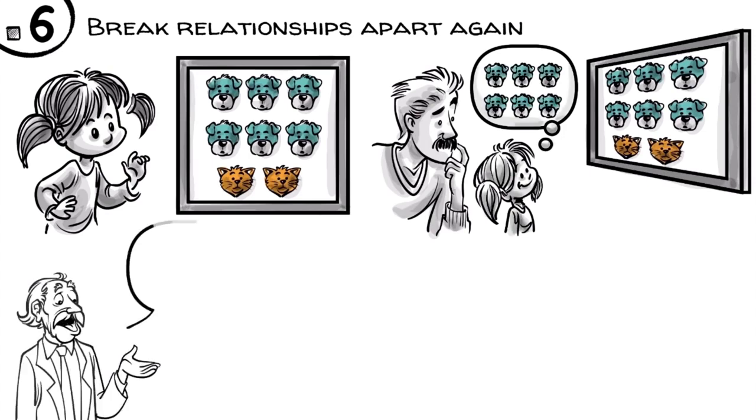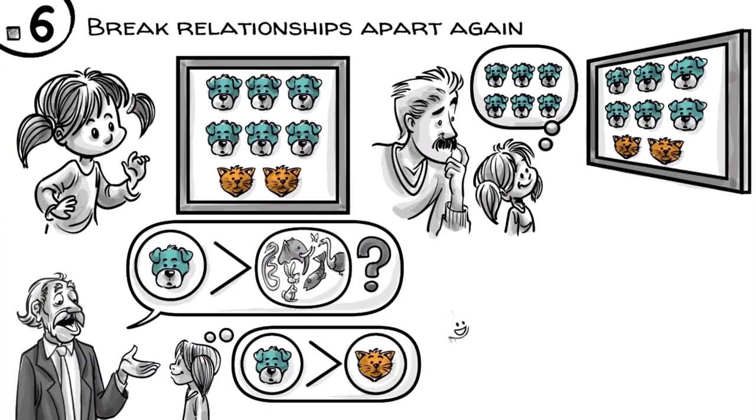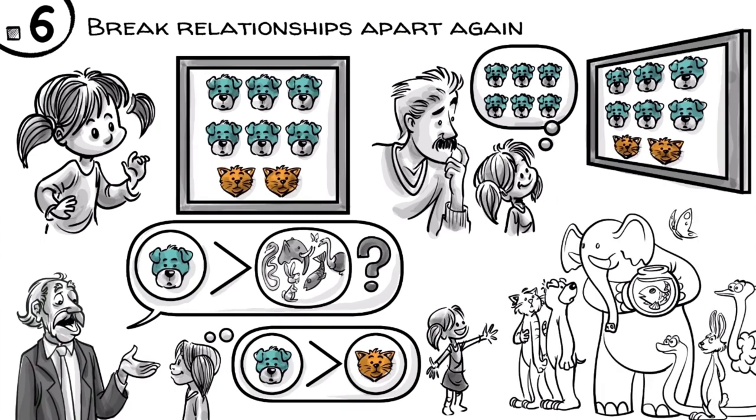When you ask further, 'more dogs than what?', the child replies: 'than cats.' In other words, if you ask 'are there more dogs or more animals?', the child hears 'are there more dogs or more cats?' At age five, most kids didn't practice enough math to break hierarchical relationships apart while still remembering the whole.